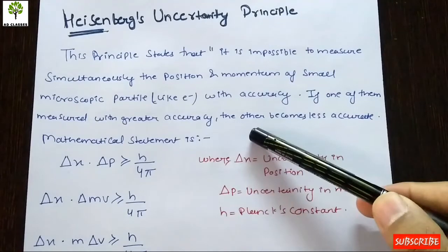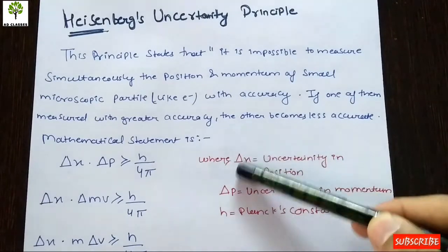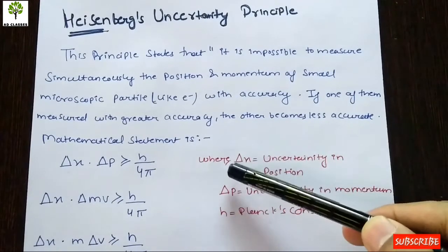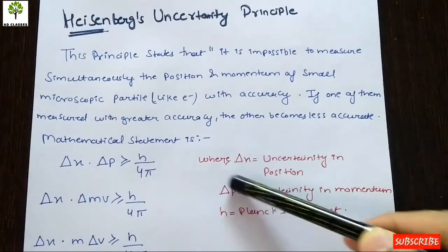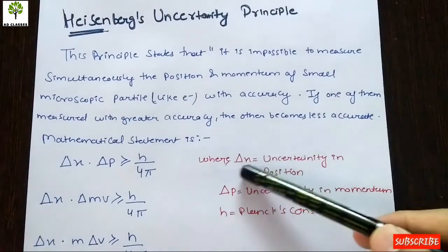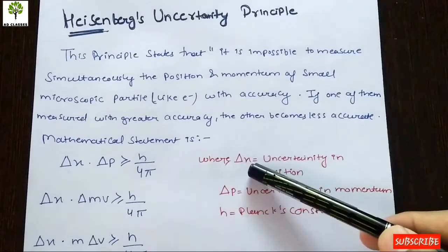अगर हम position की बात करें तो थोड़ी ज़्यादा आएगी, और momentum की बात करें तो यहाँ थोड़ी कम आएगी. तो इसलिए हम delta x और delta p लेकर चल रहे हैं — position के साथ delta x है.